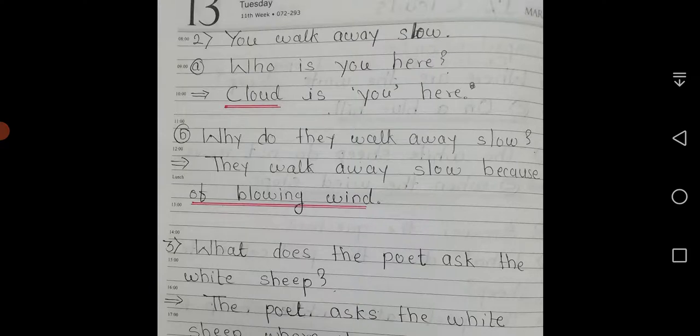Then question B, why do they walk away slow? And answer is, they walk away slow because of blowing wind.